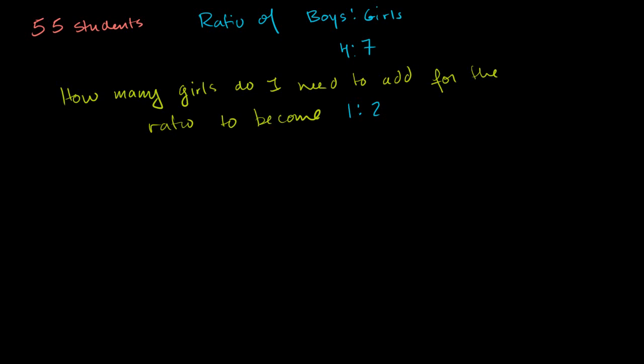Well, just going back to the basic ratio video, the first thing we can do, we know the total number of students and we know the ratio, so maybe it'll help us to figure out the number of boys and girls we have right now. So our current ratio is 4 to 7. So boys to girls right now is equal to 4 to 7.